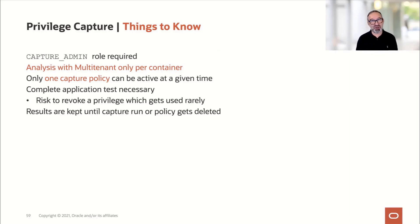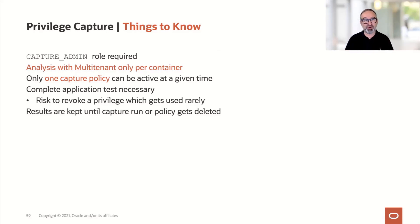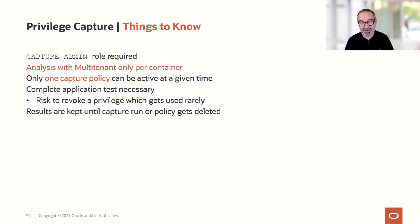It sounds great — let's remove them. But be really careful, because it may be that your capture period was too short. It could be that end-of-month calculations or asset reports also run with the Smith user and need exactly one of the privileges you revoked. Check the privileges before you revoke them and keep note of what you revoked, just in case somebody calls you a few weeks later and says Smith can't run this report anymore. Then you can figure out what happened. Just be careful — it could be that you missed something. The results are kept until the capture policy gets deleted.